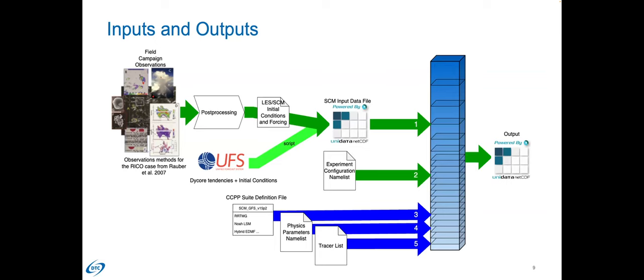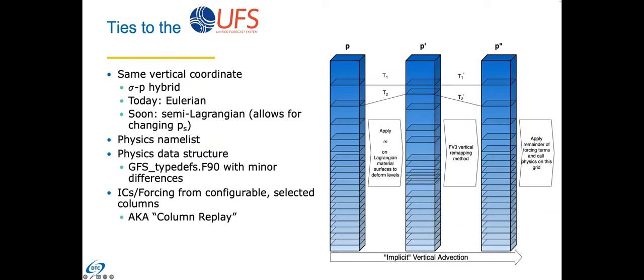The model produces a NetCDF output file, typically configured to output instantaneous values of whatever variables the user wants. These are hard-coded but easily editable in a single file. It's usually output every timestep for debugging purposes, but can be configured to output less frequently or use time averaging. Since the SCM's footprint is so light, outputting instantaneous values at every timestep for hundreds of variables is not computationally prohibitive.